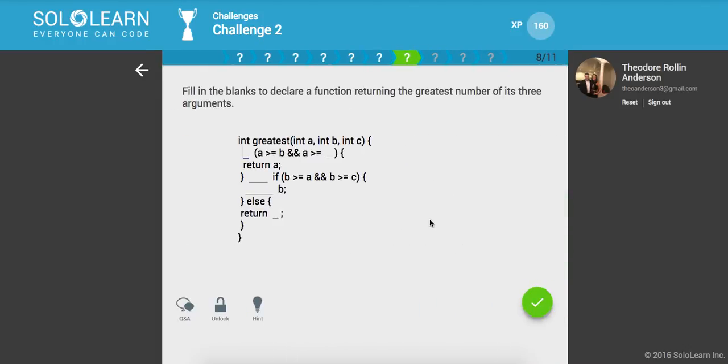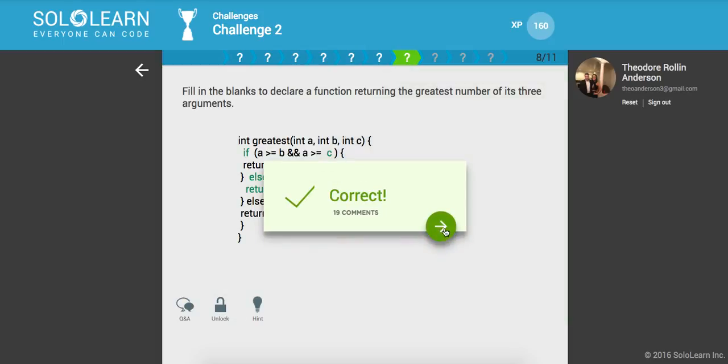So fill in the blanks to declare a function returning the greatest number of its three arguments. So we'll say if A is greater than B and A is greater than or equal to C, return A, else if B is greater than, return B, else return C. Nice.